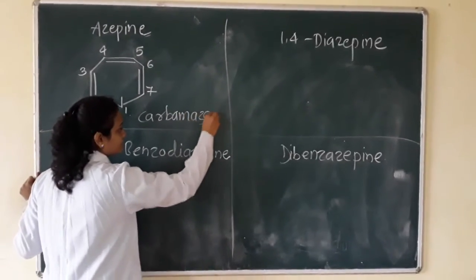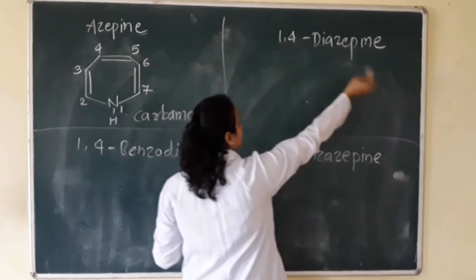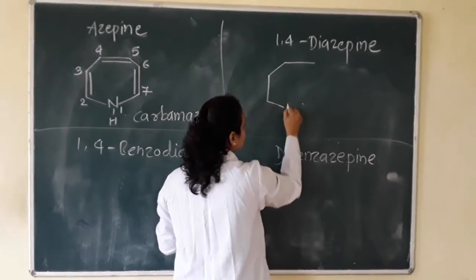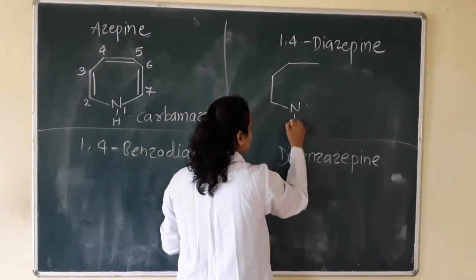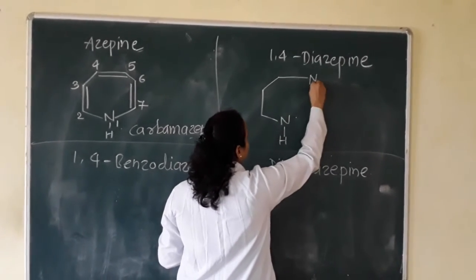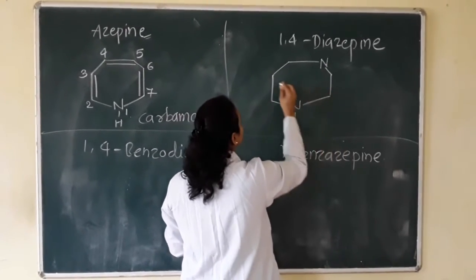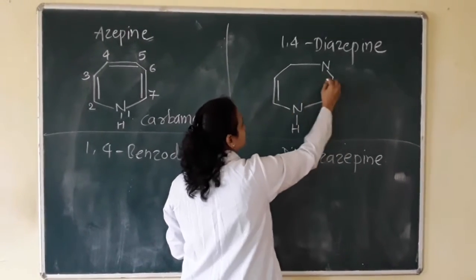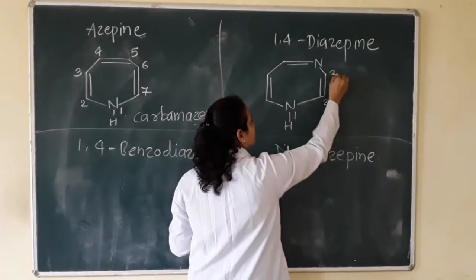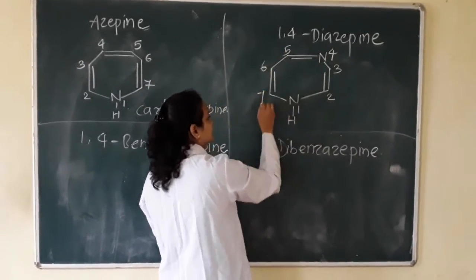Second: 1,4-diazepine. Same structure as we find. In this structure the ring numbers are 1, 2, 3, 4, 5, 6, 7.